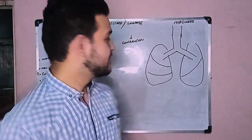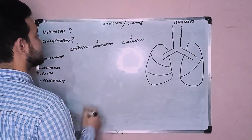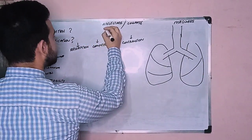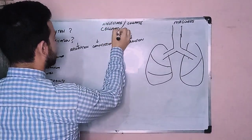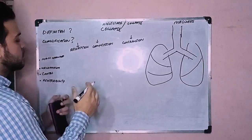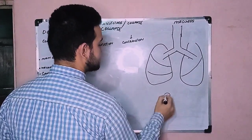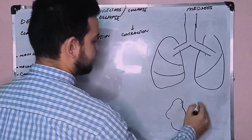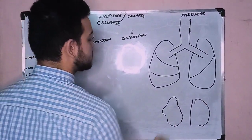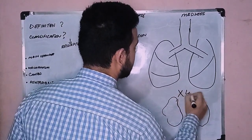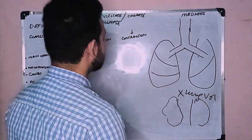Atelectasis literally means collapse. As you can see on the board, I have written 'collapse.' It is a collapse in which the lungs are unable to expand, and their inability leads to loss of lung volume. So this is atelectasis.